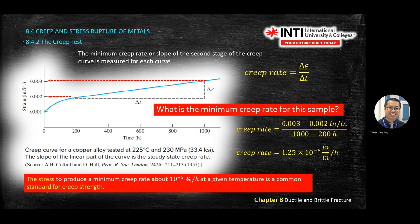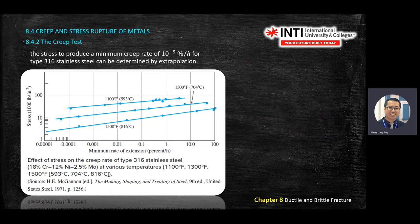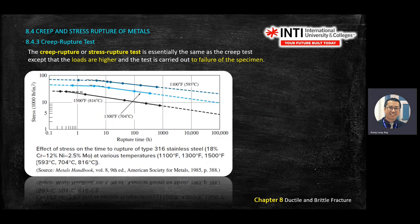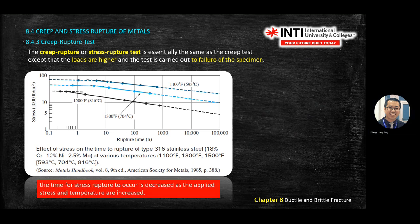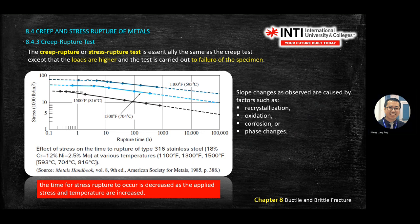This is another example: stress versus time as a creep graph. To find the creep rate from the graph, you just pick two points and calculate dy/dx. What affects the slope on the creep curve includes recrystallization, oxidation, corrosion, and phase change.